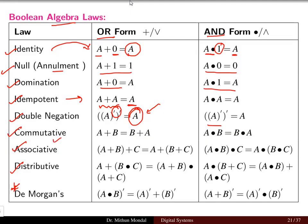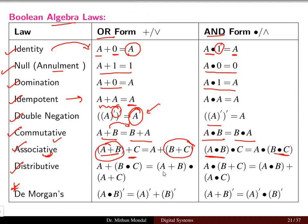The commutative law states A plus B equals B plus A, and A dot B equals B dot A. The associative law means A plus (B plus C) equals (A plus B) plus C — the same holds for the AND function. The distributive law: A dot (B plus C) equals (A dot B) plus (A dot C), and A plus (B dot C) equals (A plus B) dot (A plus C).